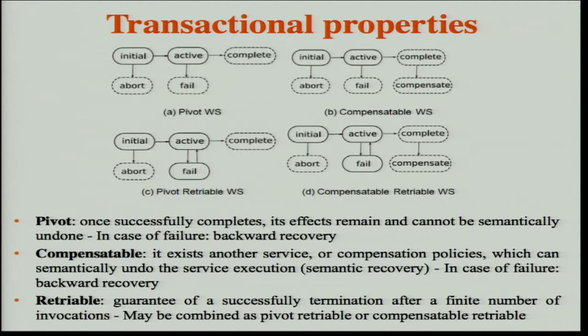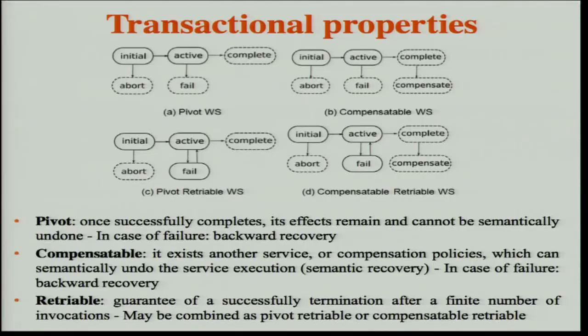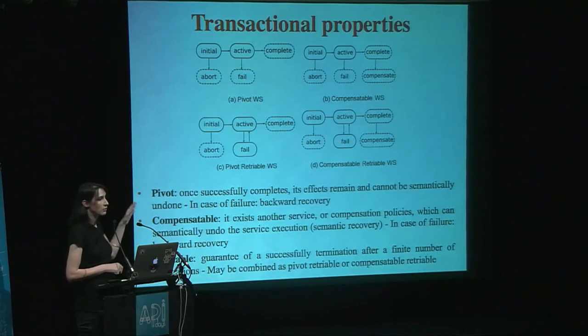So we have a pivot-retriable service, which offers both backward recovery and forward recovery. And a compensatable-retriable service, which offers backward, forward, and semantic recovery. All the services we manage are described by quality of service properties and transactional properties.